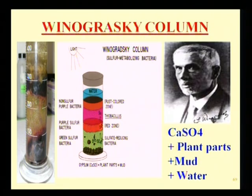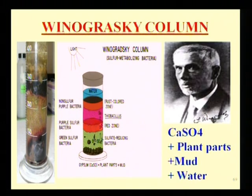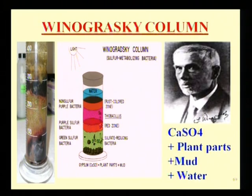The Winogradsky column is a lab technique used for studying and cultivating sulfur-metabolizing bacteria, developed by scientist Sergei Winogradsky. He used calcium sulfate, plant parts, mud, and water added into a column, incubated at room temperature under sunlight. After a few days, different color zones appeared in the column, and he concluded that sulfur-metabolizing bacteria of the sulfur cycle can be cultivated in the laboratory.